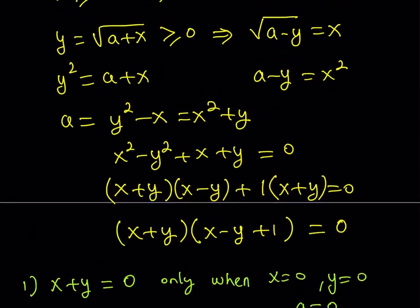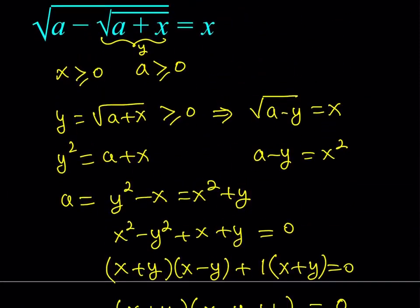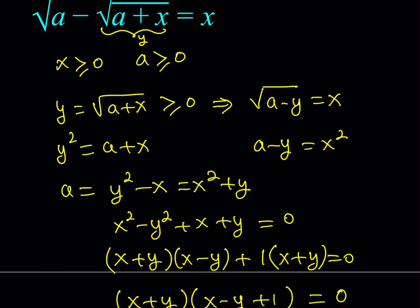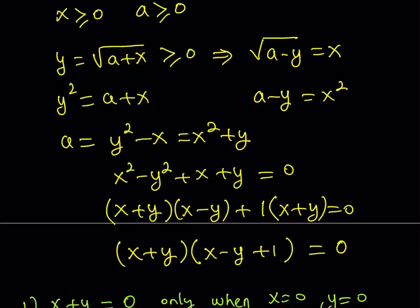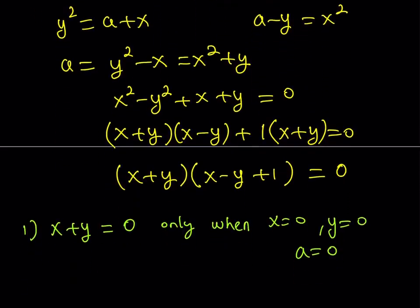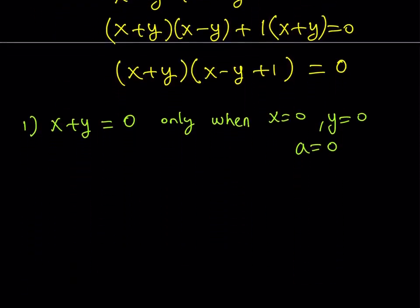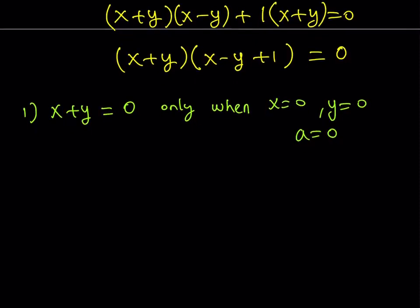This is kind of obvious because if you go back to the original equation and replace a with 0, you're just going to be getting the fourth root of x is equal to x, and that can only be satisfied when x is 0. And of course, we have the condition that x has to be 0 anyway, so it can't be anything else. So this is one of the solutions.